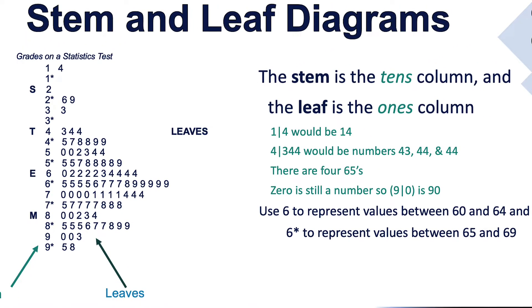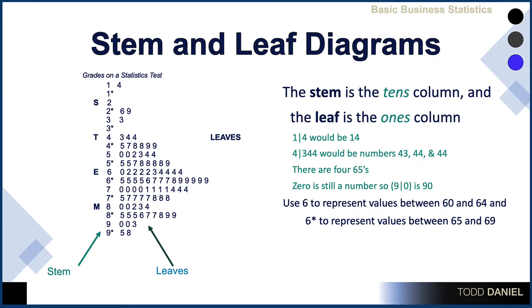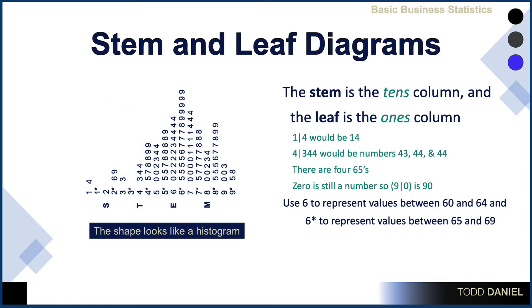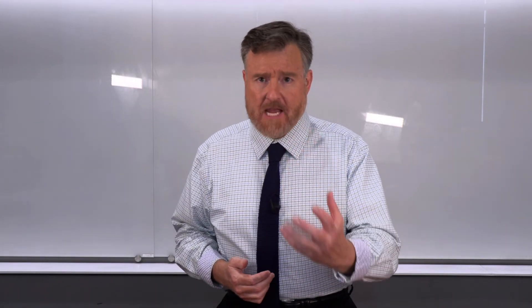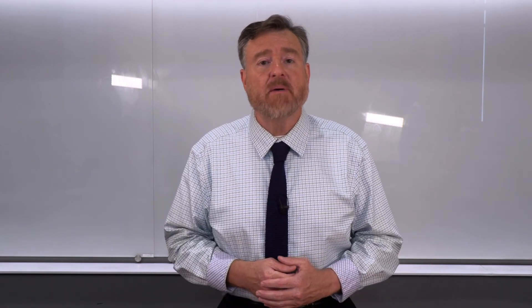I can see the shape of the data. Which column has the most scores? It's the 6-asterisk column. Which score occurs most frequently? By counting in the leaves, I can see it is the value of 69. I can figure the high score, the low score, the most frequently occurring score, and the shape of the data. In fact, if I were to turn this stem and leaf sideways, we could see that the shape of the data does reveal a histogram. I could even draw a line over the top of these data and create something that looks like a distribution. I can see the original values and the shape of the data — this is why a stem and leaf is the best of both worlds.